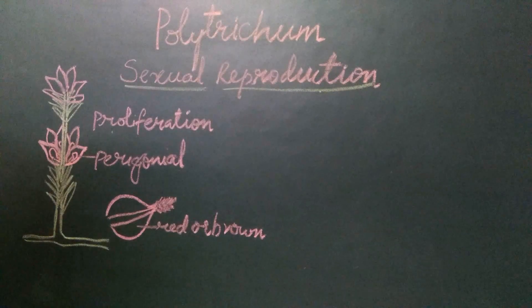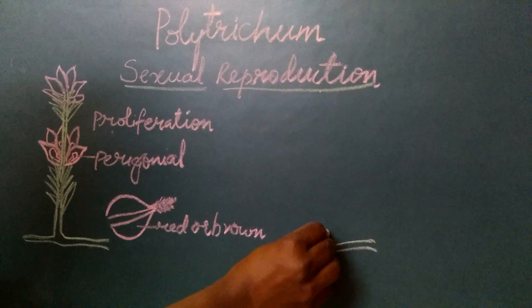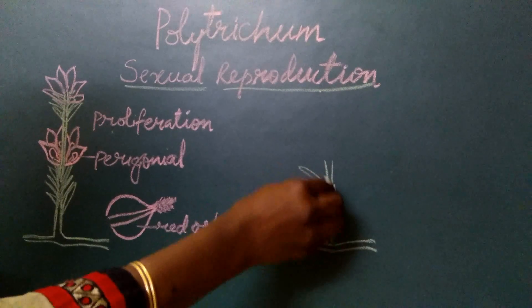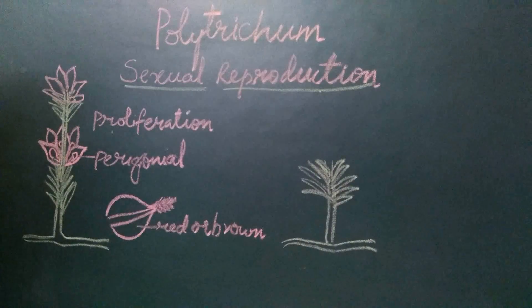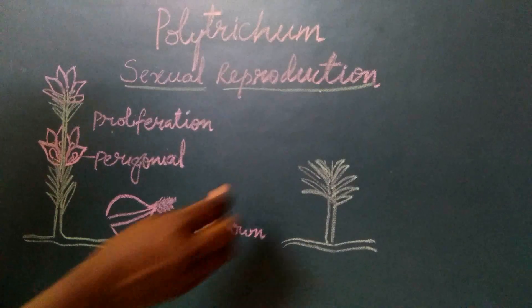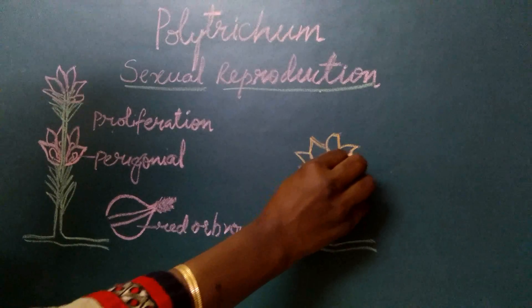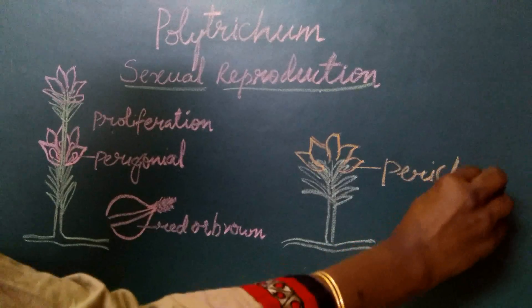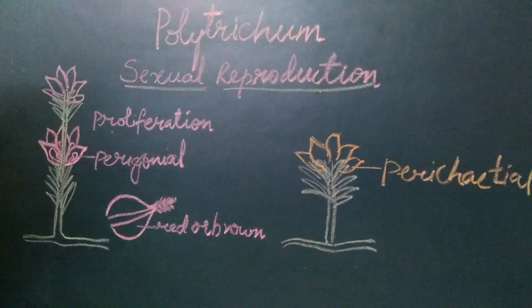When we look at the female plant, it has an underground or subterranean rhizome, an aerial shoot, and leaf-like structures called phylloids. At the end of the growing season, the female plant also produces a cluster of leaves. This cluster of leaves is called the perichetial leaves. In the axils of the perichetial leaves, we find the archegonia.